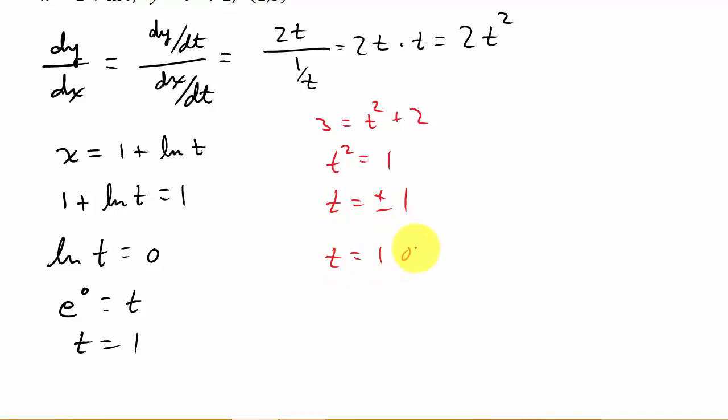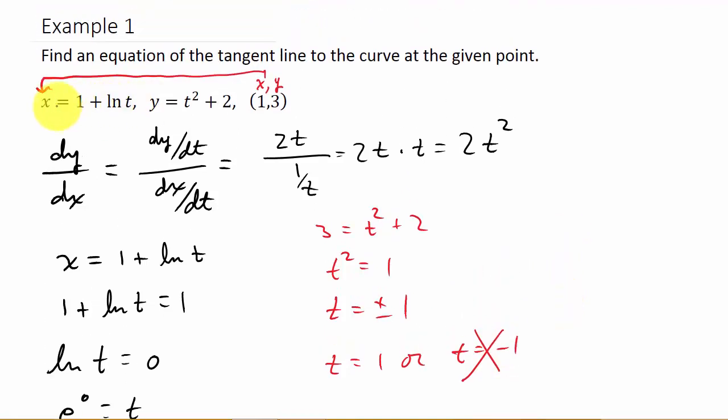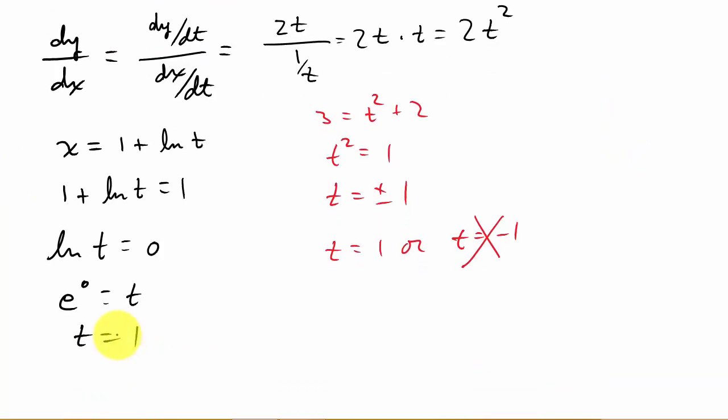But we know, see, t equals 1 or t equals negative 1, but we know it's not this one because the negative 1 does not satisfy this equation. See, if we plug in t equals negative 1, we would have the natural log of negative 1, and we can't do that. So you can use either equation to solve. It doesn't matter. So we get t equals 1. So now we know what t is.